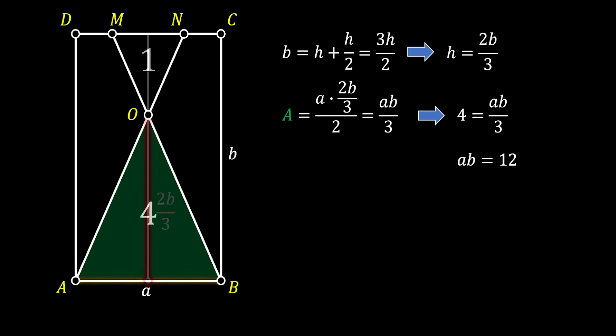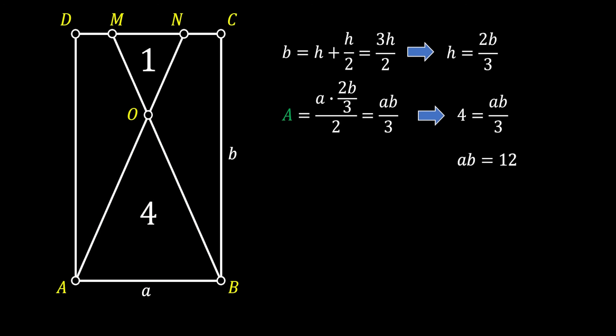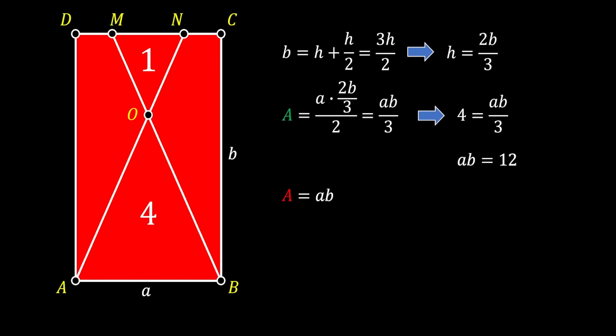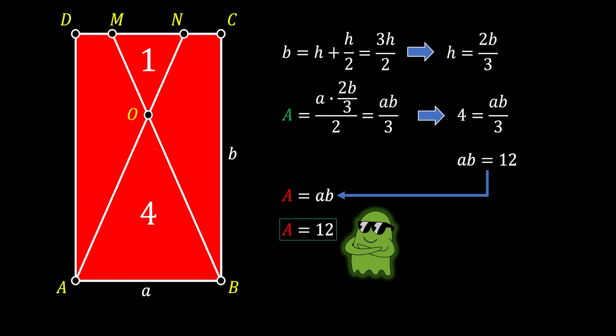Remember, we can substitute this value in and finally get that the product A times B must be equal to 12. We are looking for the area of our big red rectangle, which is equal to the product of its sides A and B. Since we already have the value of A times B, we can conclude that the area of our rectangle is equal to 12 square units, and this is our solution.